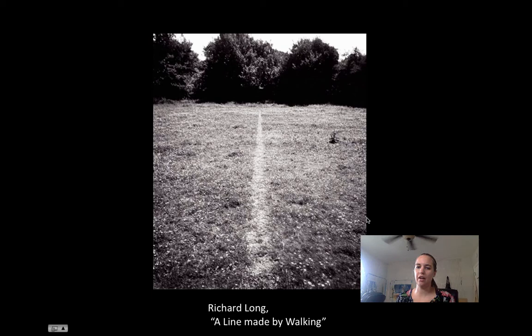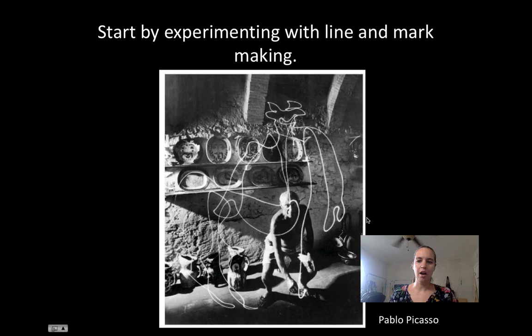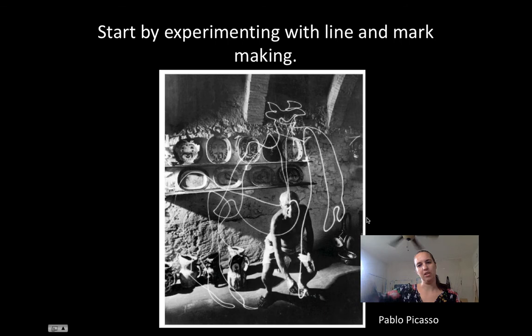Here you can see a line in the grass, because a line can be made by anything — in this case it's someone walking back and forth until a line has been created. Picasso is making a line using light and a time-lapse photograph, moving the light around so that the photograph captures the line.